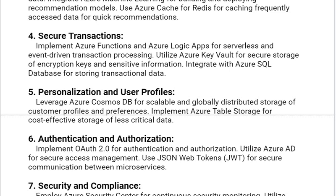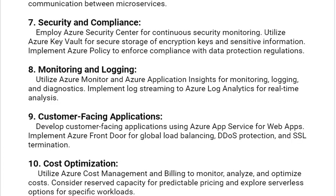Use JSON Web Tokens (JWT) for secure communication between microservices. Our seventh solution is Security and Compliance. Employ Azure Security Center for continuous security monitoring. Utilize Azure Key Vault for secure storage of encryption keys and sensitive information. Implement Azure Policy to enforce compliance with data protection regulations.